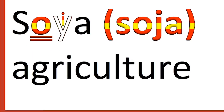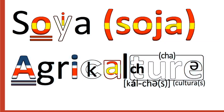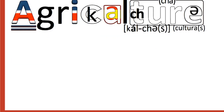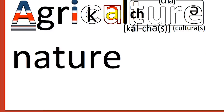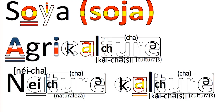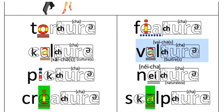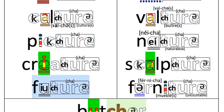Agriculture. All words that end with -TURE are pronounced with a 'ch' sound. Think about cha-cha-cha: nature, culture, torture, feature, vulture, picture, sculpture, creature, future, furniture.